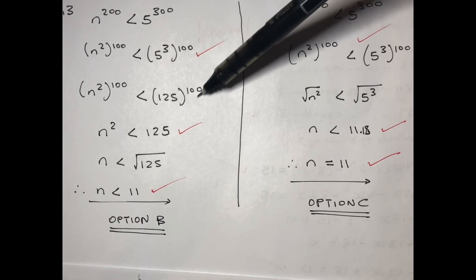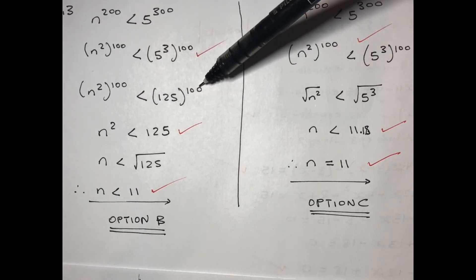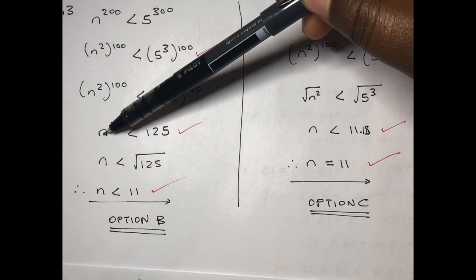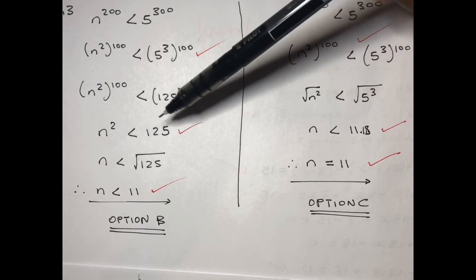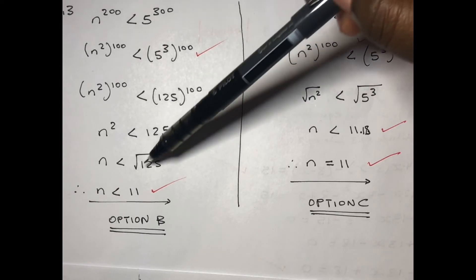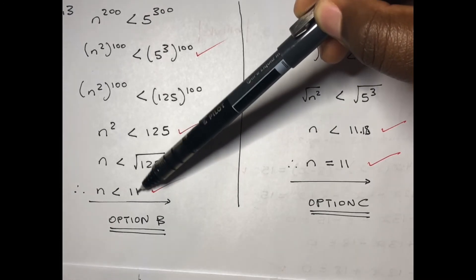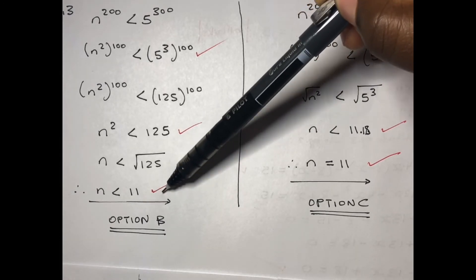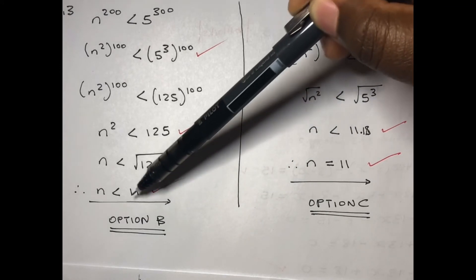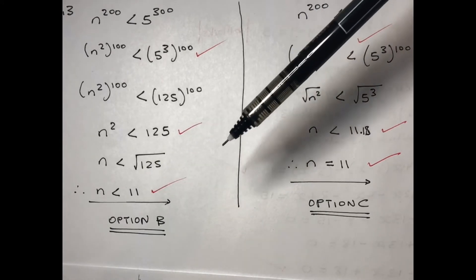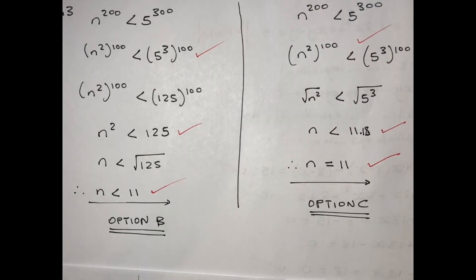It's just a matter of simplifying 5 to the power 3 to get 125, giving you 125 to the power 100. Because the exponents are the same they fall away, so you get n to the power 2 less than 125. The square root of 125 equals 11.18 — ignore the decimal and write 11 as the whole number.